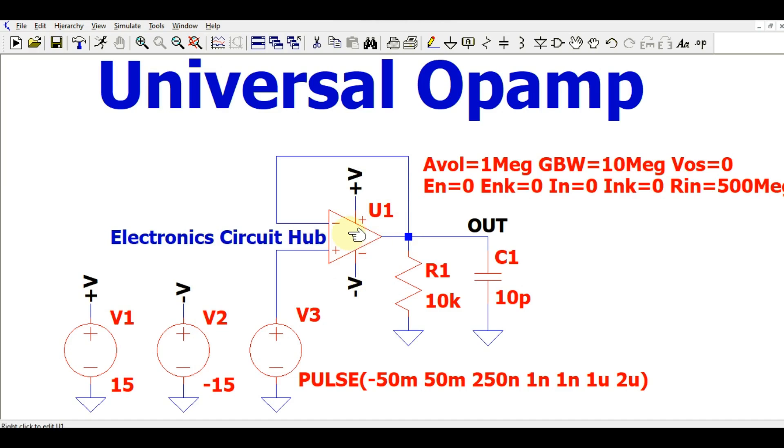So let us see what are the parameters for universal op-amp. You can see the parameter is AVOL, that is open loop voltage gain, and for the universal op-amp, let us say it is 1 megaohm. This is GBW, that means gain bandwidth product, this is 10 megaohm.